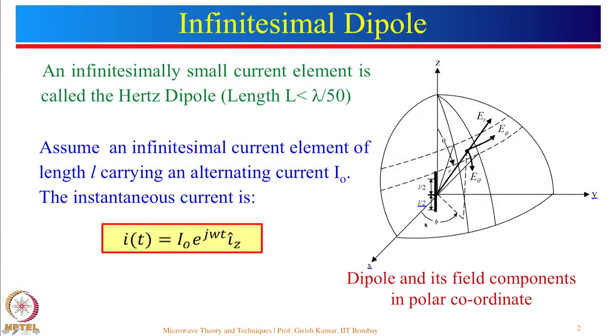The infinitesimal dipole is defined as a dipole where the length is less than lambda by 50. This is not a practical antenna at all — it is just to explain the concept. We assume an element of length L with uniform current along the element. Note this is an approximation; at the open end, current will be equal to 0 and will not remain uniform.